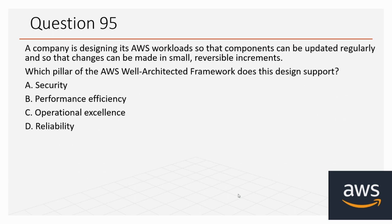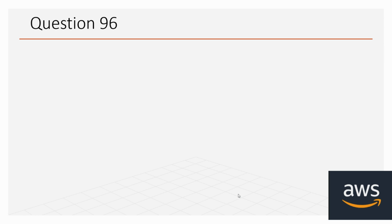Question number 95: A company is designing its AWS workload so that components can be updated regularly and changes can be made in small, reversible increments. Which pillar of the AWS Well-Architected Framework does this design support? The correct option is C, Operational Excellence.